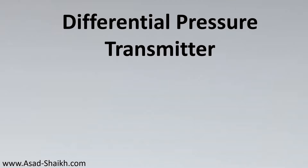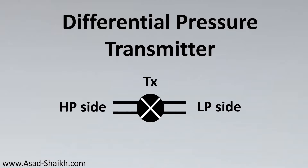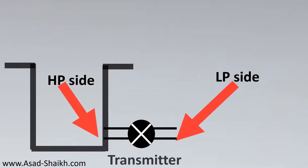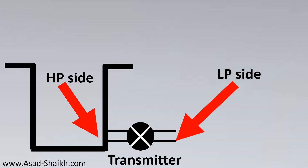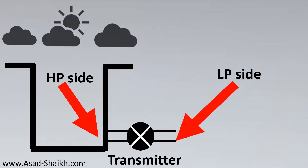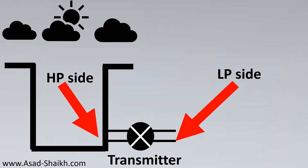Here is our differential pressure transmitter. It has the HP side and the LP side. This is how it gets connected to the tank. The HP side, as the name suggests, would be connected to the side where there is the highest pressure, and the LP side is kept open to atmosphere because this is an open tank. Had this been a closed tank, the LP side would have been connected to the top of the tank.